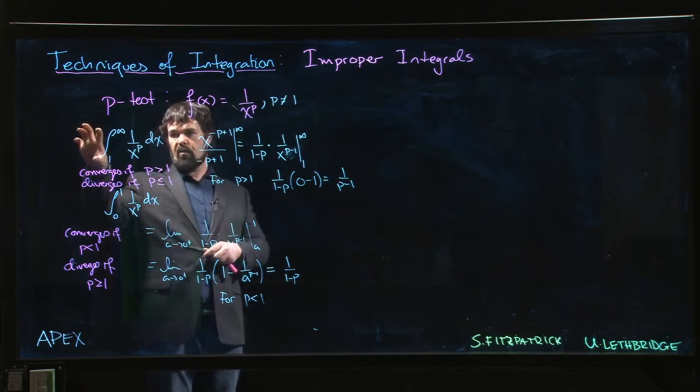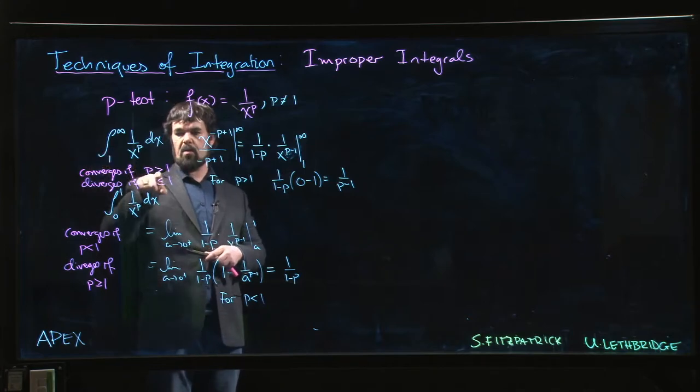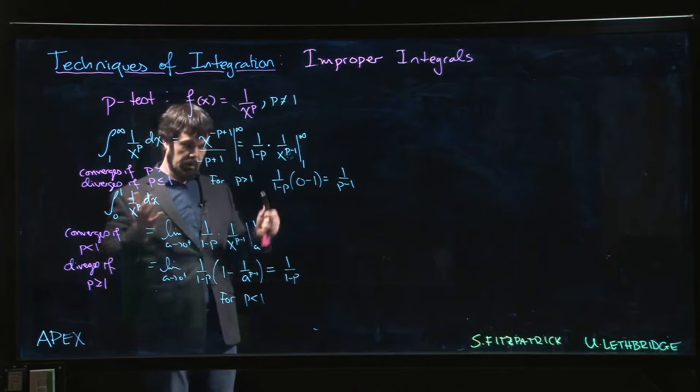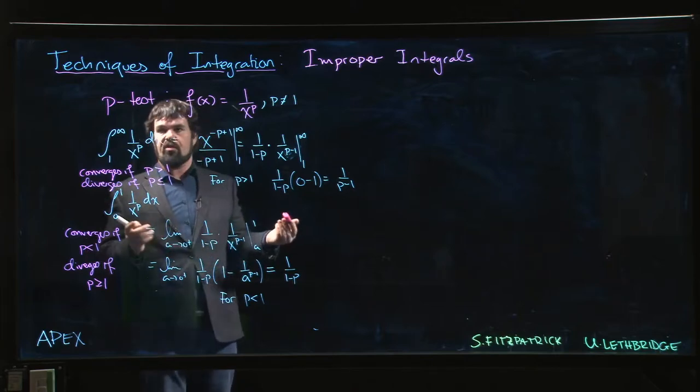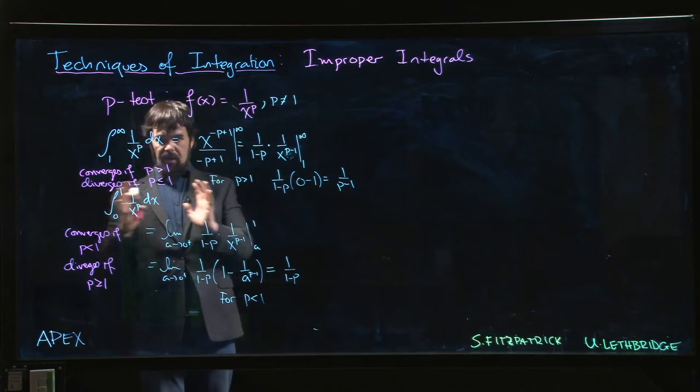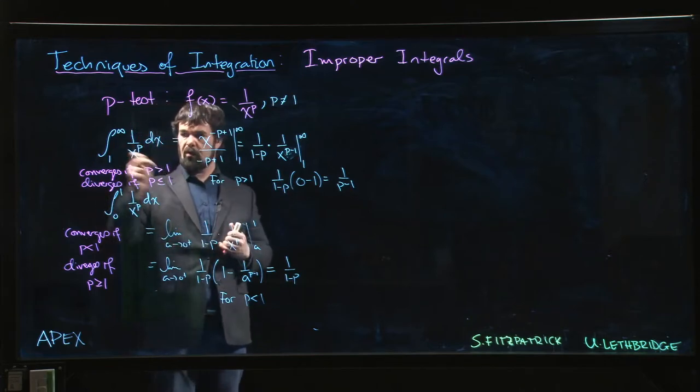But if we're looking at x going to infinity, then we want p to be bigger than 1. If we're looking at x going to 0, then we want p to be smaller than 1. This is the so-called p-test. So you remember this is sort of a basic kind of edge case. What do you do with 1 over a power of x?